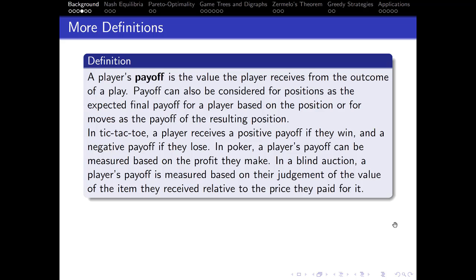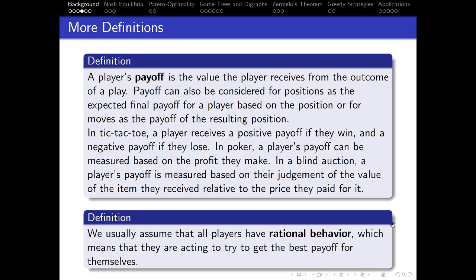If a player were just going to sell an auctioned item, their valuation might simply be the selling price. But if it were an art auction and they kept the piece, their payoff would be determined by how highly they value the piece versus the money spent to acquire it. We also usually assume that all players have rational behavior, meaning they act to get the best payoff for themselves and not just making decisions that hurt their payoff. We assume everyone wants to win, or in this case, to get the highest payoff.